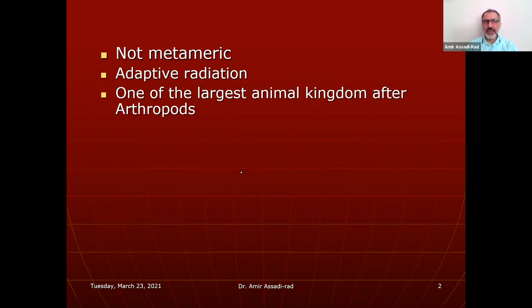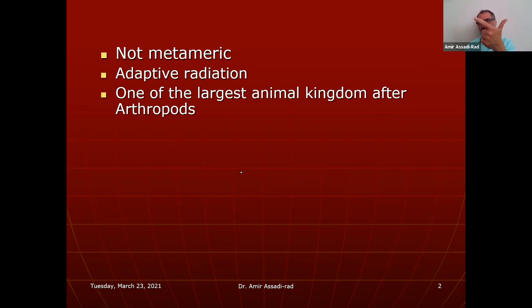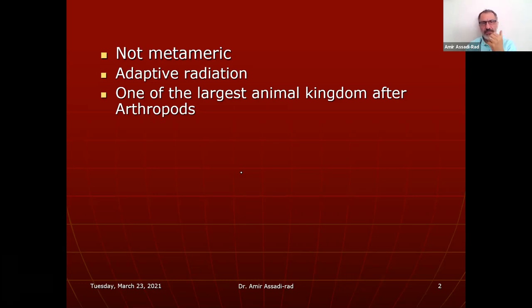Mollusca is one of the largest animal phyla after Arthropoda. The top three largest phyla are Arthropoda, Mollusca, and Nematoda. Only bivalves and gastropods move to shallow and fresh waters. The most intelligent invertebrates are cephalopods. The coelom is limited to the heart, some gonads, and parts of the body.